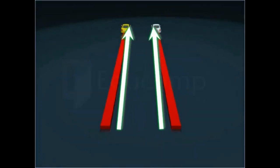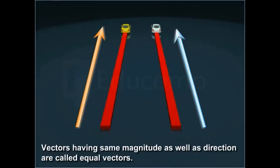Such vectors having same magnitude as well as direction are called equal vectors.